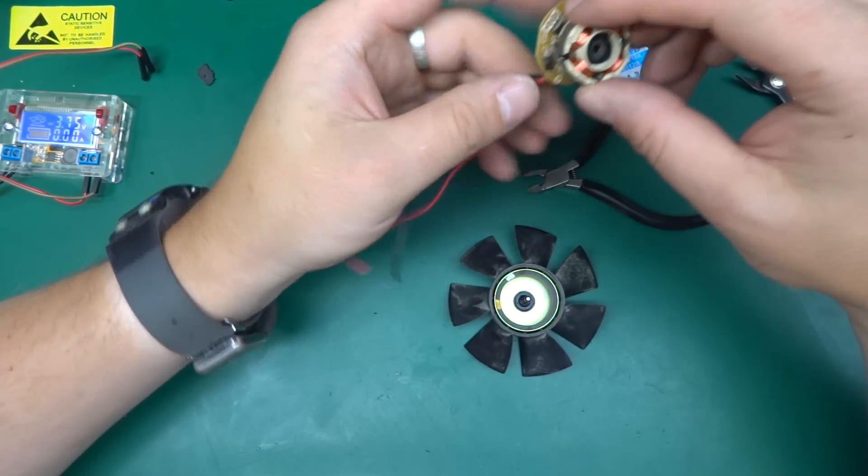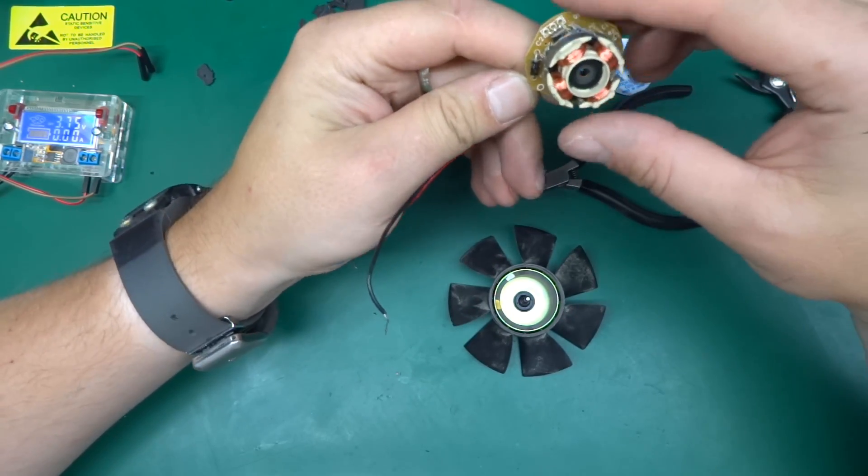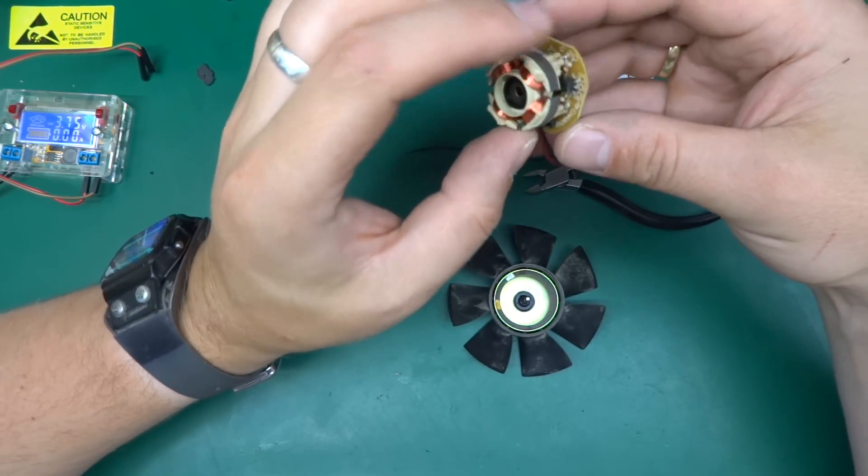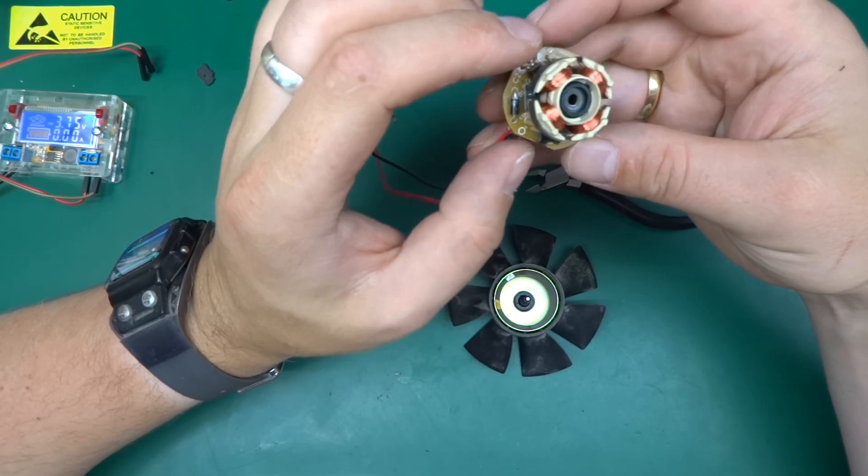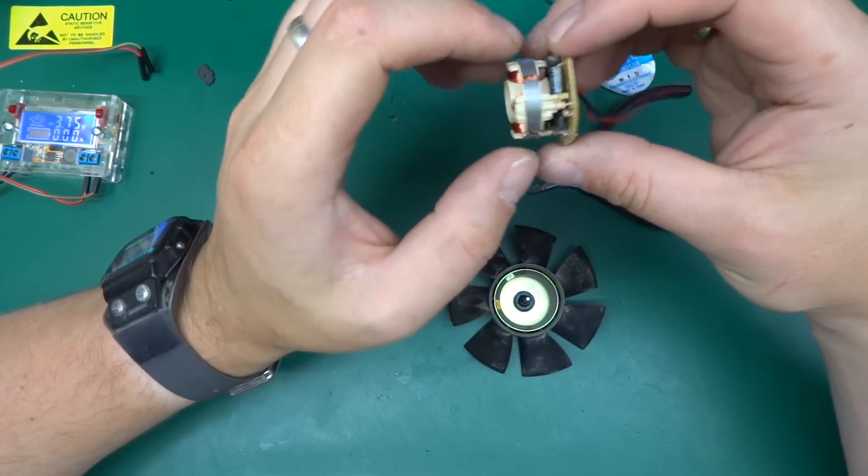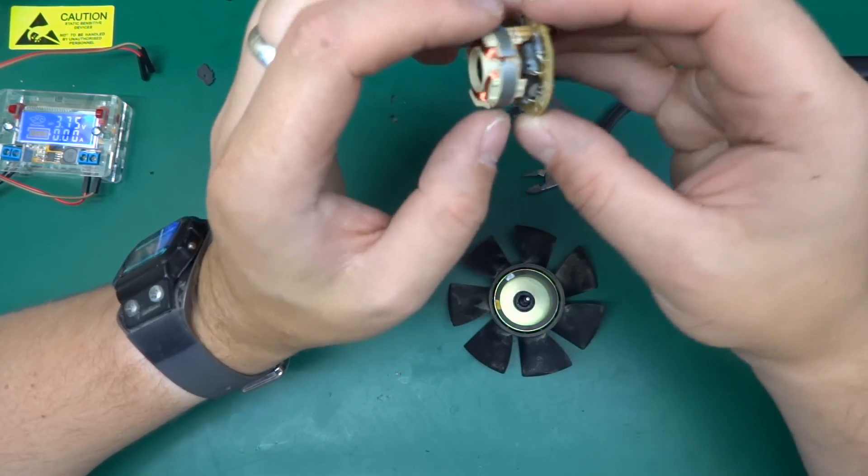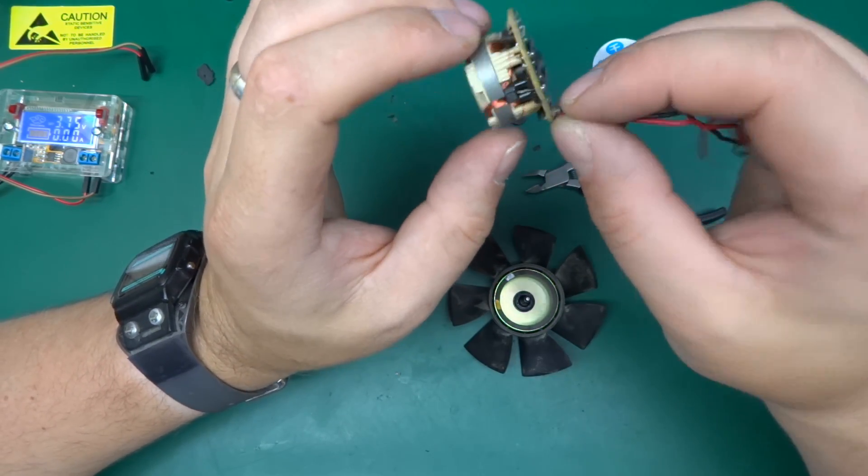He attempted to make a quadcopter out of those and to do that if you know in a quadcopter you have to have the rotors of two of the rotors turning the other direction than the other two. And what he did was the simplest thing just turned it upside down. And I want to see what it takes to actually flip it over.